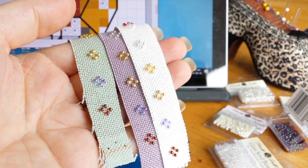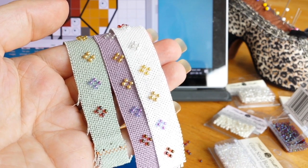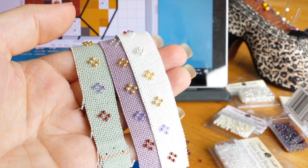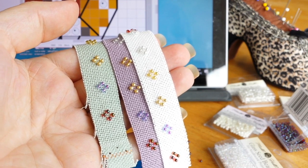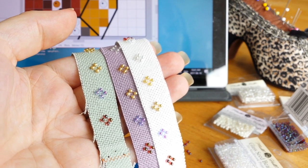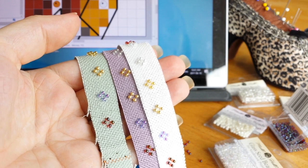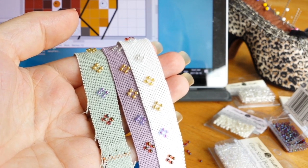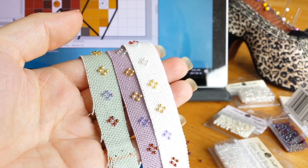A lot of cross stitch patterns do have beading in them, or sometimes people substitute French knots for beads. If you're somebody who doesn't like French knots, then I'll put a link to the tutorial I have in the video description below. It's actually a really easy tutorial, so even if you've never been able to do French knots, I guarantee you'll be able to do them after the tutorial.